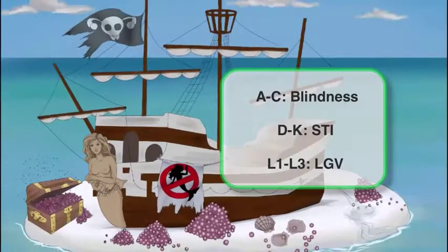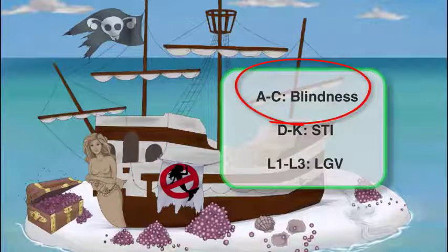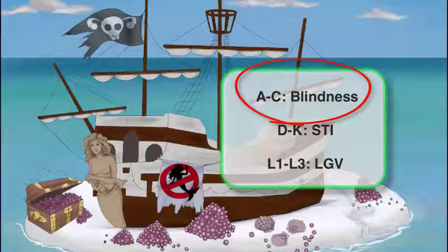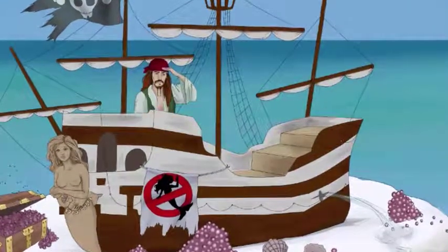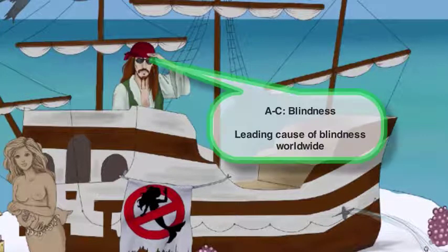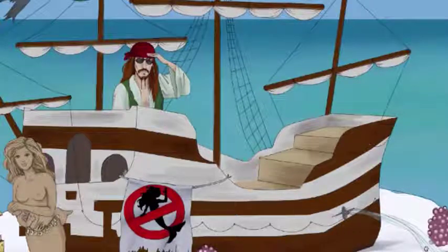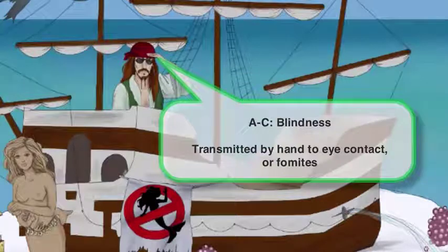Let's move on to serovars A through C, associated with the disease trachoma. Trachoma is the leading cause of blindness in the whole world. You can remember the serovars are A, B, C — as in you see with your eyes. We'll have trachoma symbolized by our captain, who doesn't only have one eye patch — he actually has two. Those aren't sunglasses; they symbolize blindness. Since he's the captain — the leader — he's the leading cause of blindness worldwide. One of his hands is up, shielding the sun from his eye to symbolize transmission, which is actually hand-to-eye contact, though fomites can also transmit the bacteria as well.